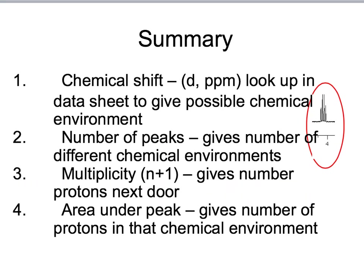In summary, we use chemical shift, or delta in parts per million, to give us a possible chemical environment. The number of peaks gives us the number of different chemical environments. The multiplicity, or splitting, gives us the number of protons next door. And the area under the peak, if you are given the area under the peak, gives us the number of protons in that chemical environment.